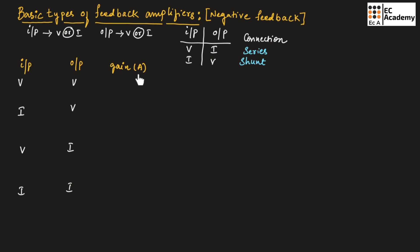Let us find the gain value. The first combination is voltage and voltage. If input is voltage and output is voltage, such type of connection is series-shunt connection. Input is voltage — it can be written as series. Output is voltage — it can be written as shunt.